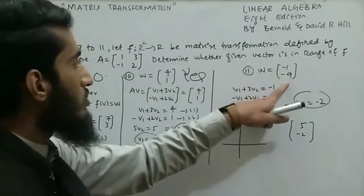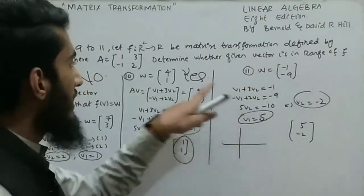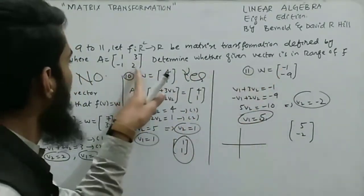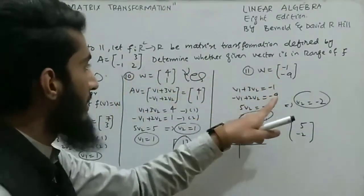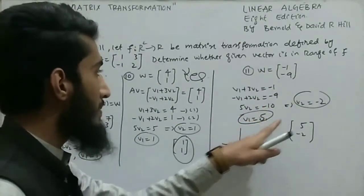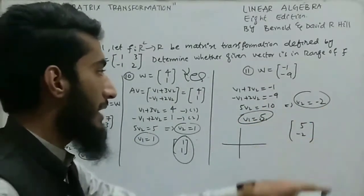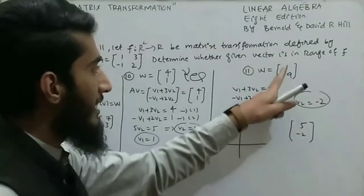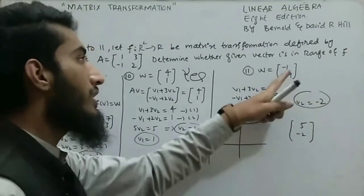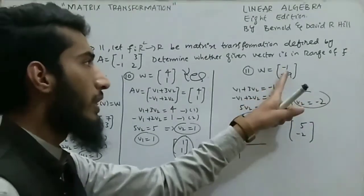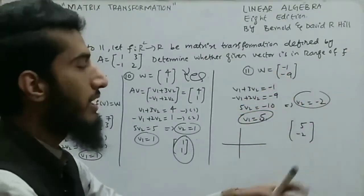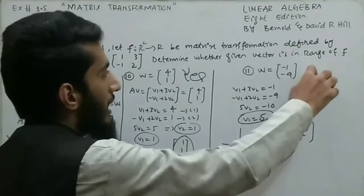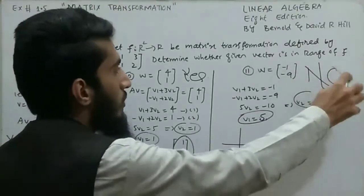For question 11, w = (-1,-9). The system becomes: v1 + 3v2 = -1 and -v1 + 2v2 = -9. Solving gives v1 = 5 and v2 = -2. So v = (5,-2), which does not lie in the range of w = (-1,-9) because we have a positive value where only negative values are expected. The answer is no.